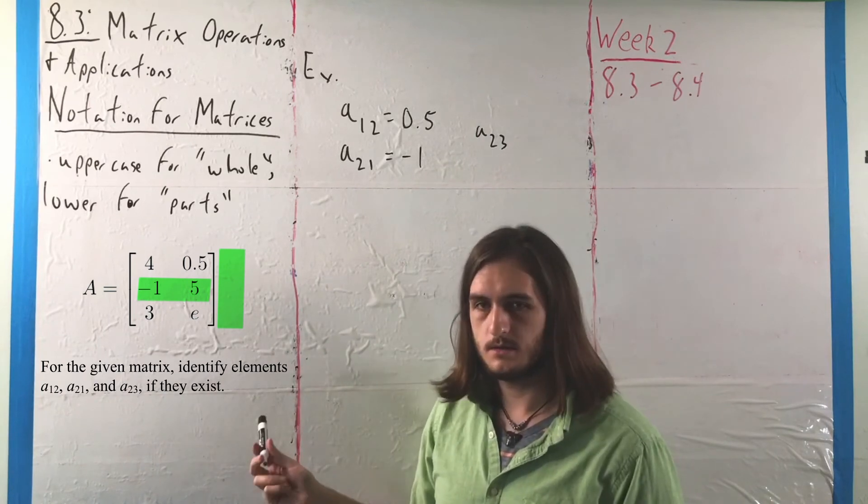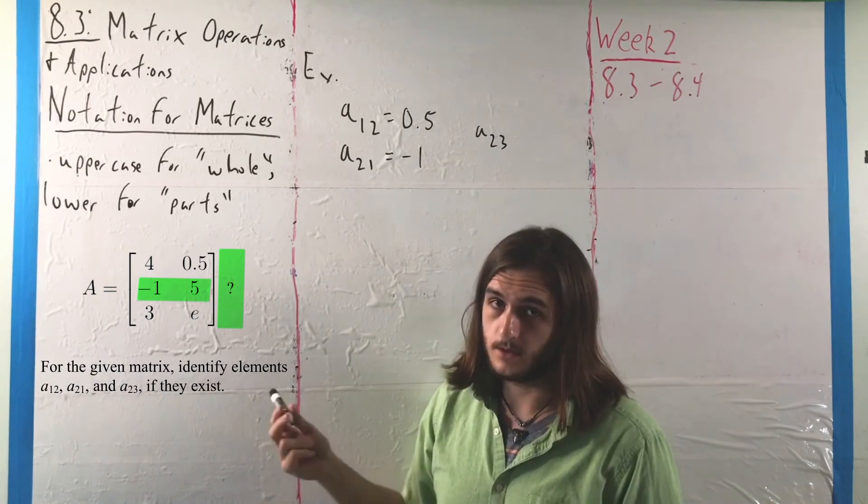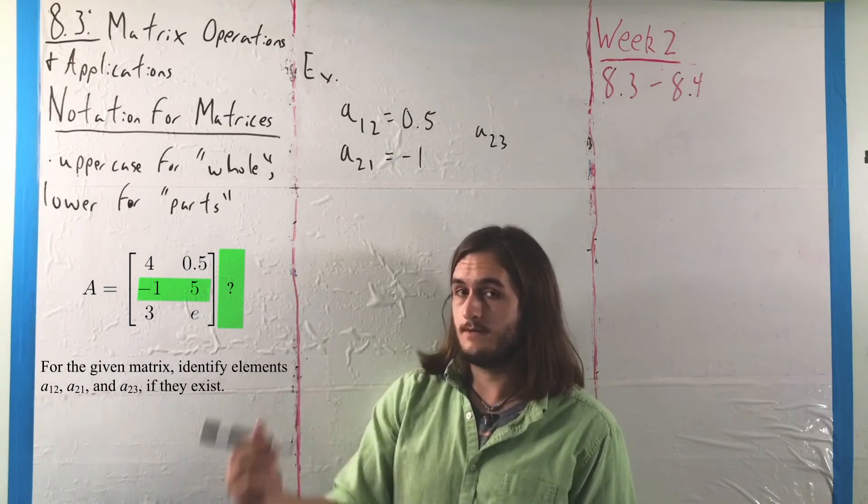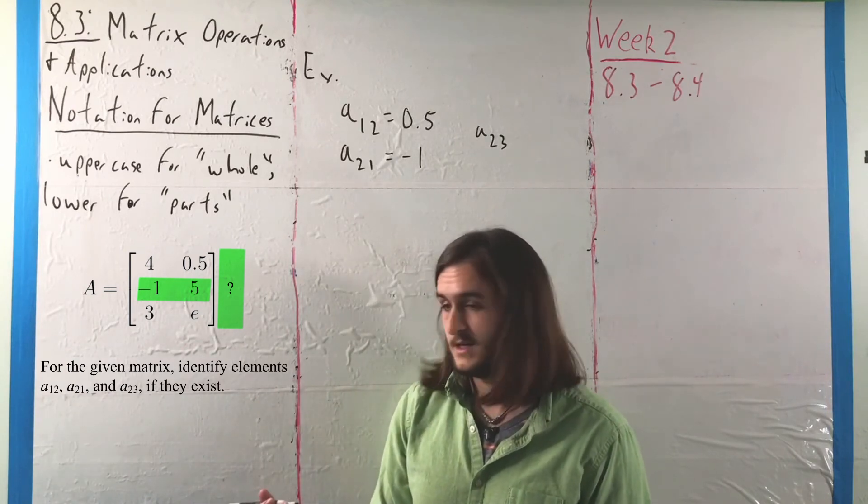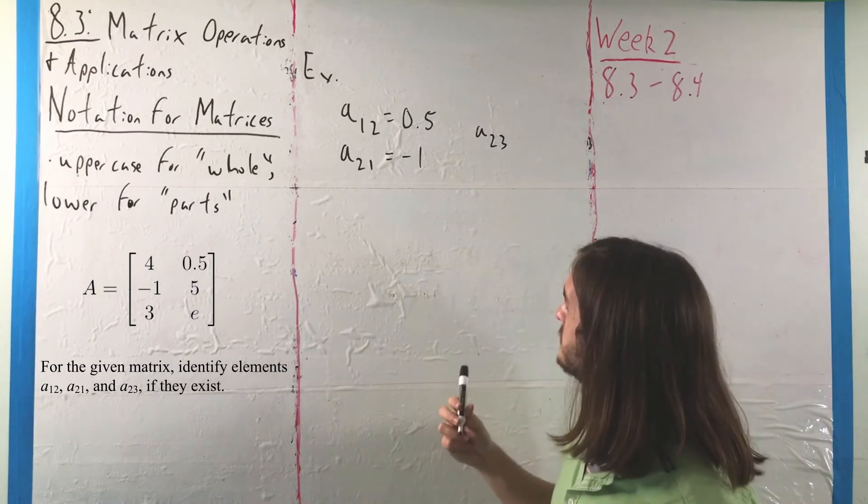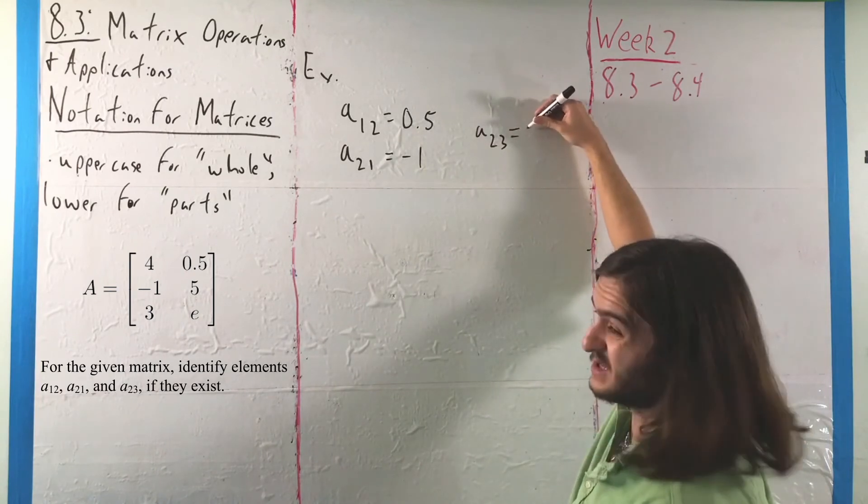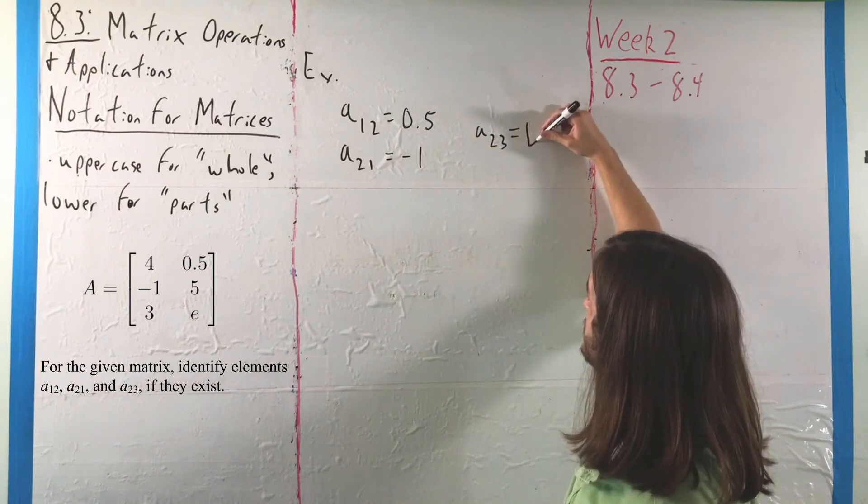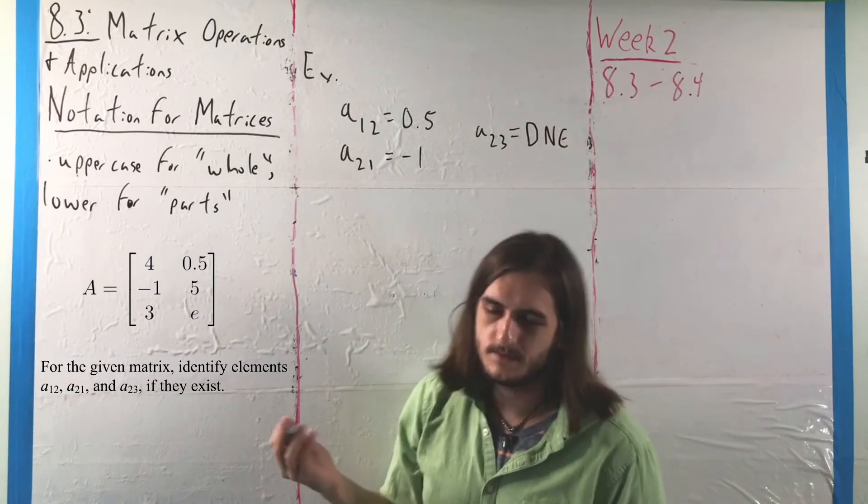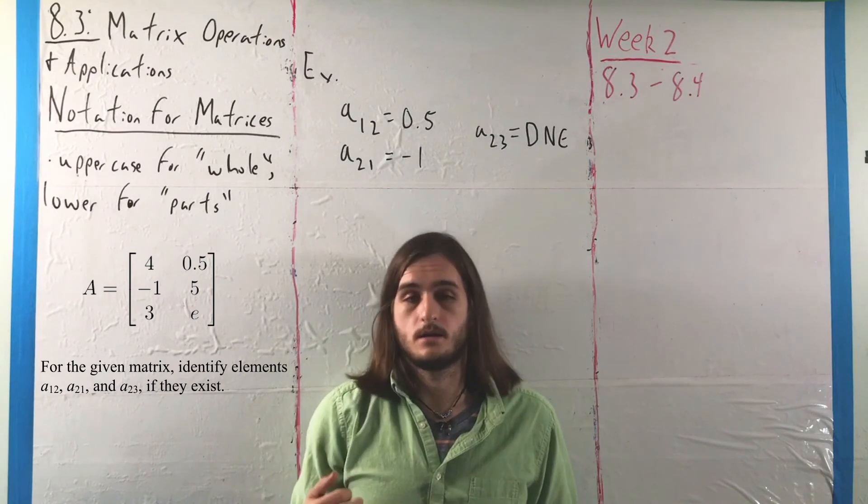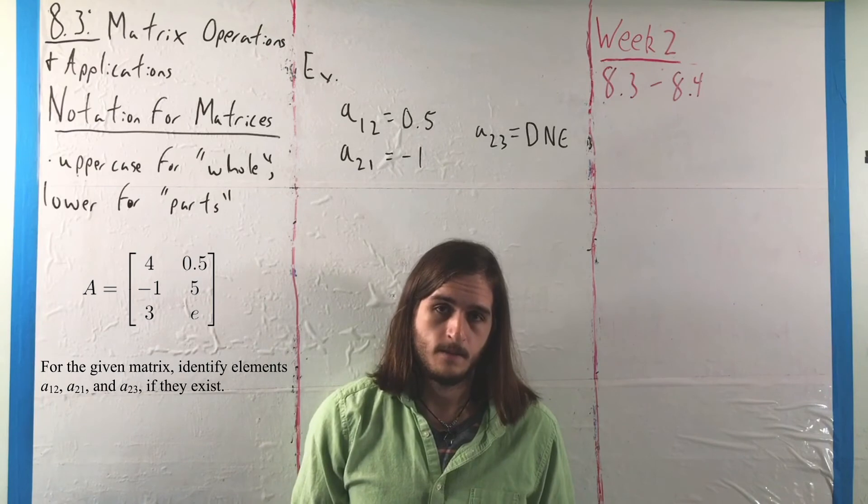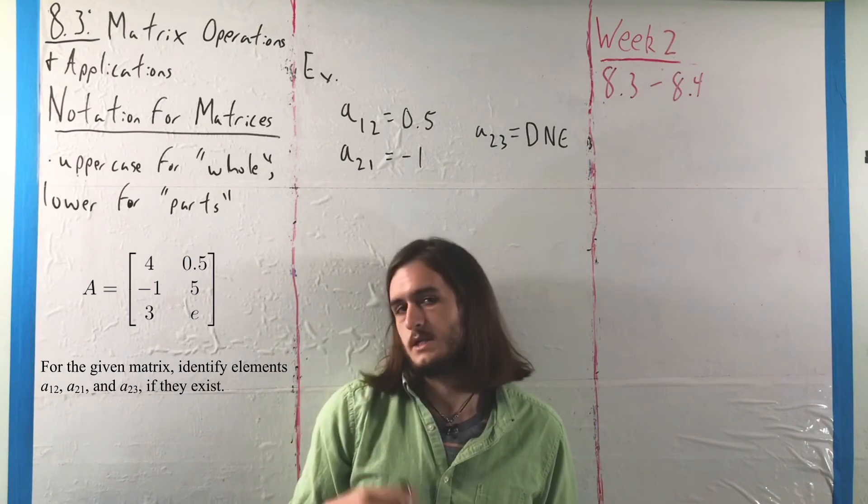But the problem is, we don't have a third column. There's no way to get there. Nothing can be assigned to that value. So when we're looking for element a23, there's nothing there. We'd say that this element does not exist.